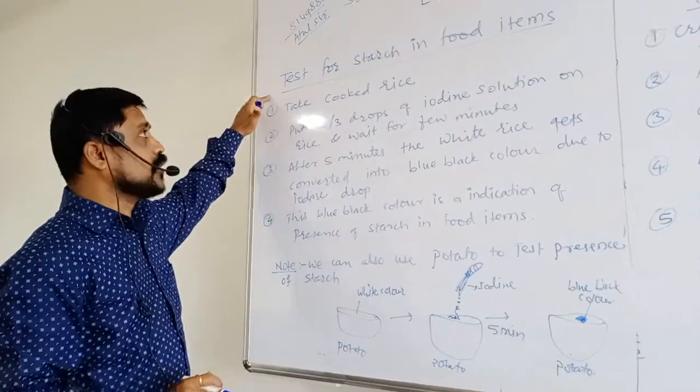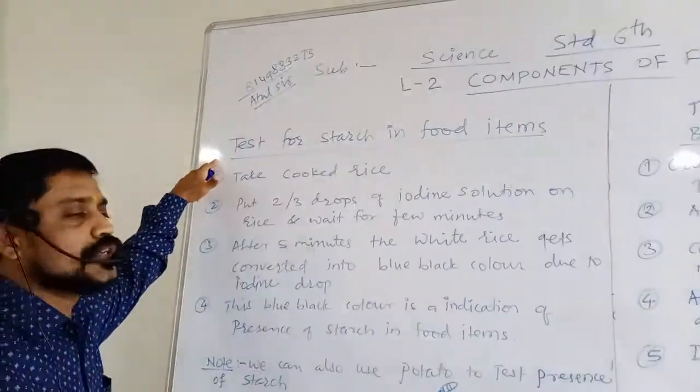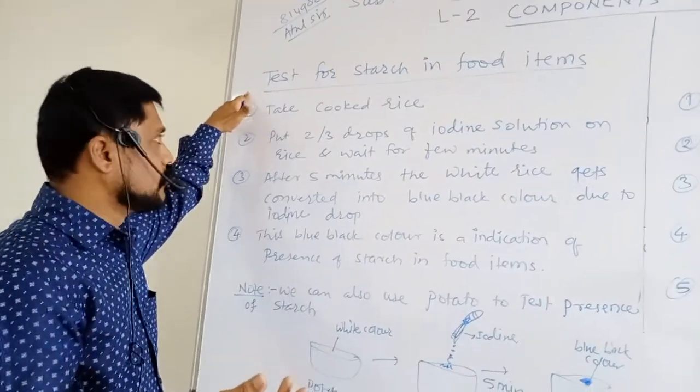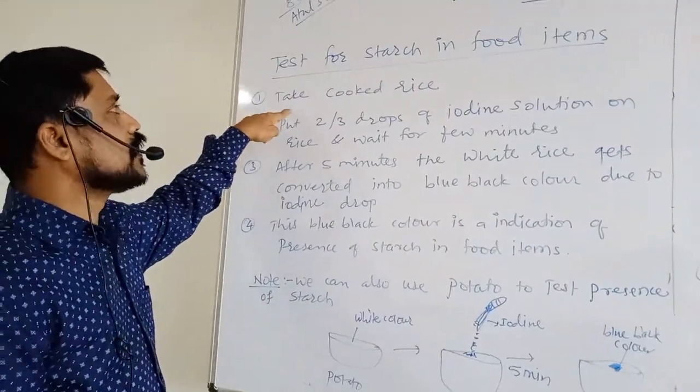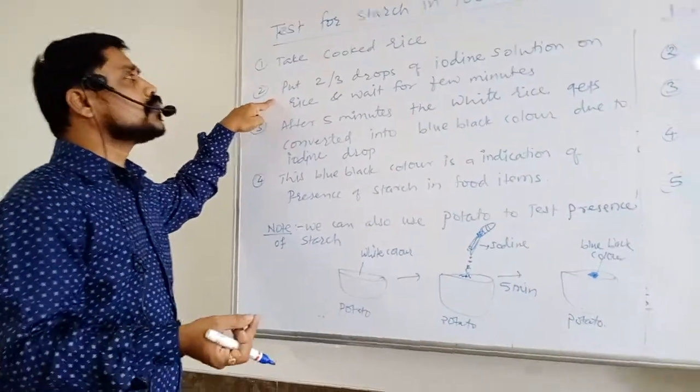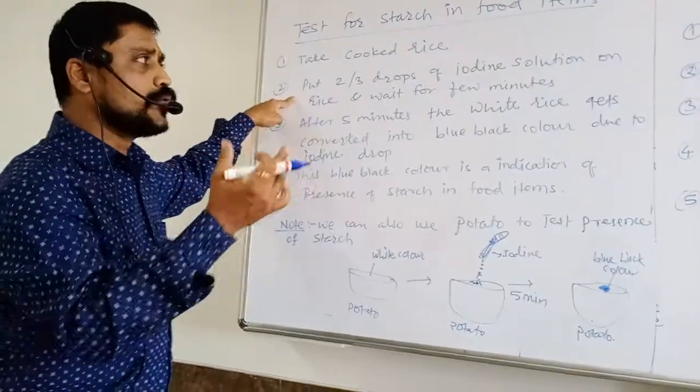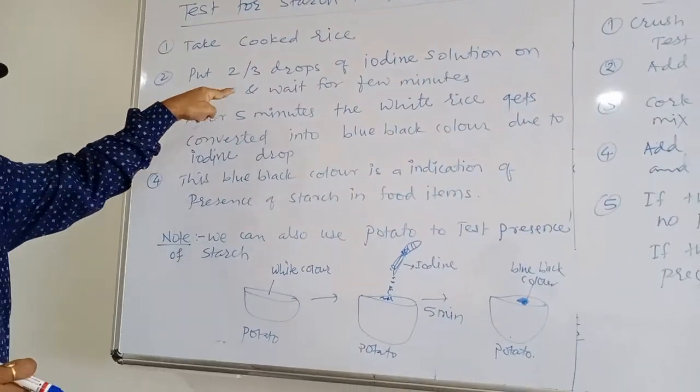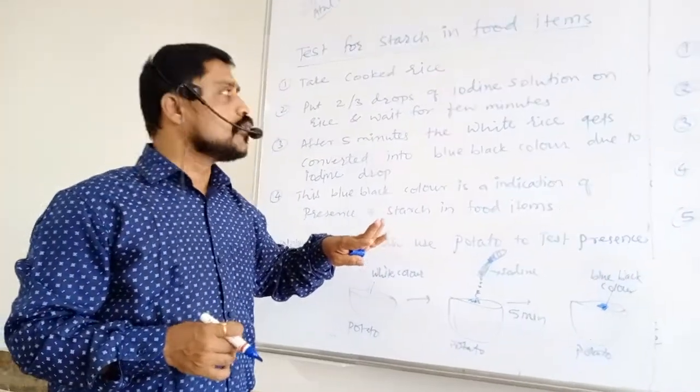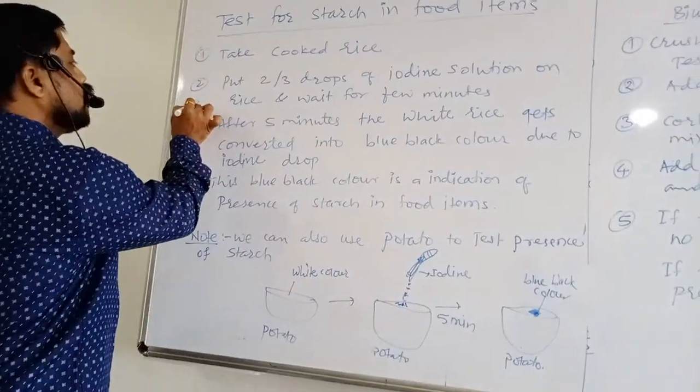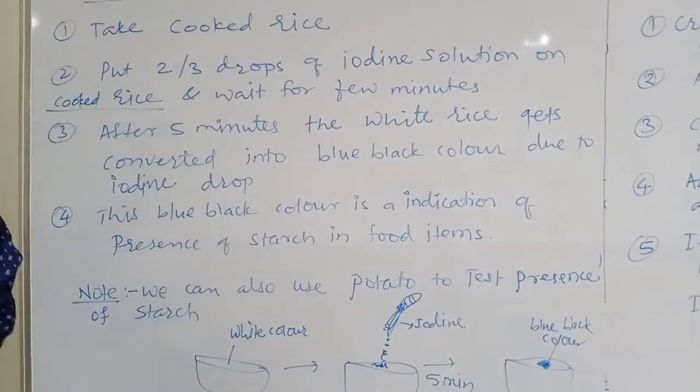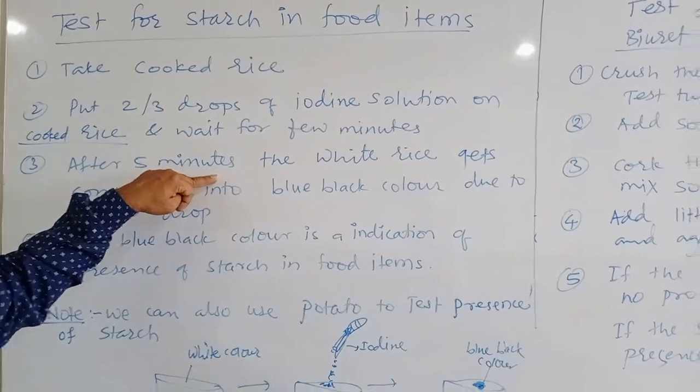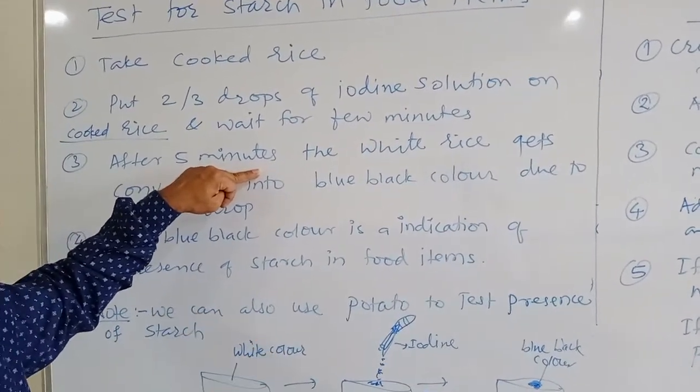First of all we will go for the test for starch in food items. We can take rice, cooked rice. First take cooked rice. Put 2-3 drops of iodine solution on the cooked rice. And wait for few minutes. You can wait for 3-5 minutes. After 5 minutes the white rice will get converted into blue black color.